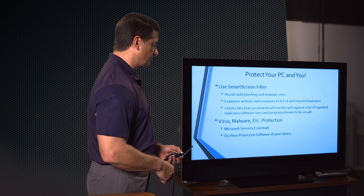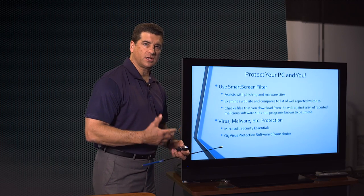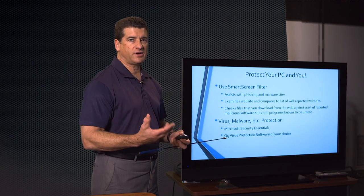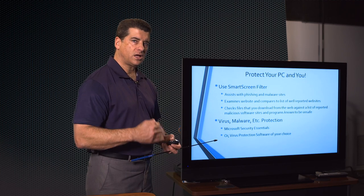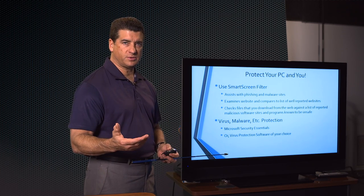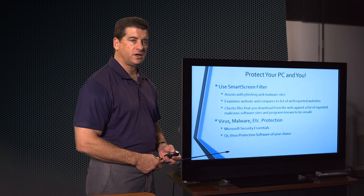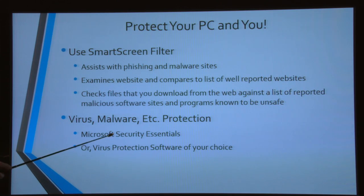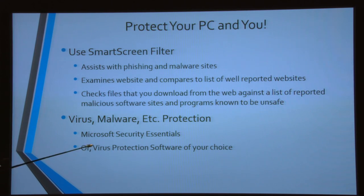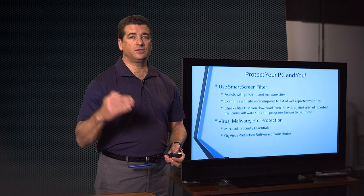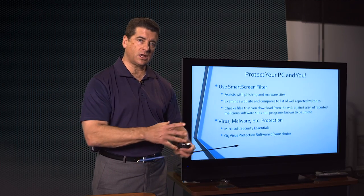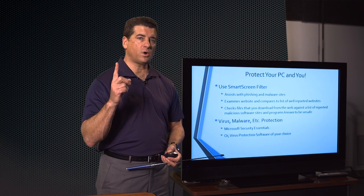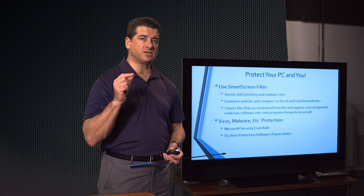The other protection is virus protection. I've discussed viruses many times on this show. You want to have some kind of virus protection. Microsoft has protection — the free one in the new version is called Microsoft Security Essentials. If you don't want to use that one, there are purchased options and other free downloads. Just make sure you are doing it. There's one bad way to do it, and that is not to do it.